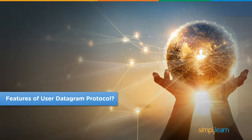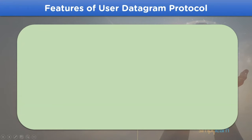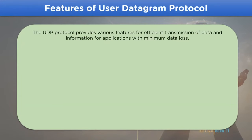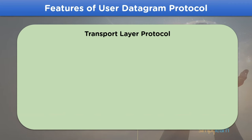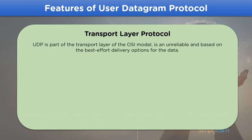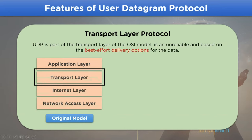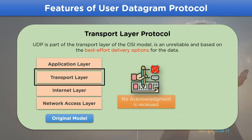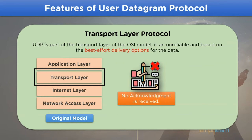The next heading is features of User Datagram Protocol. UDP provides the network with very efficient and easy-to-understand protocol features. The first feature is that UDP is a transport layer protocol of the OSI model and is used to deliver best-effort delivery options for data transmission, meaning the protocol does not provide any acknowledgement from the receiver side for the data transmitted.